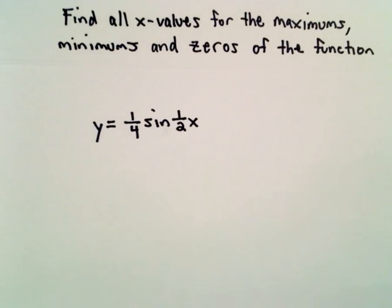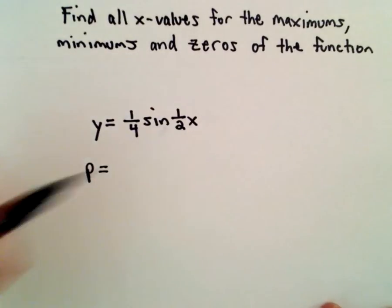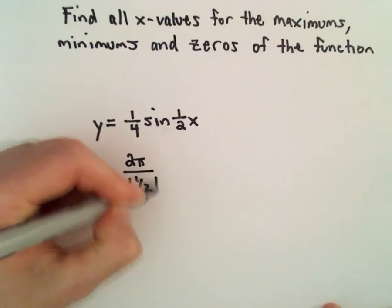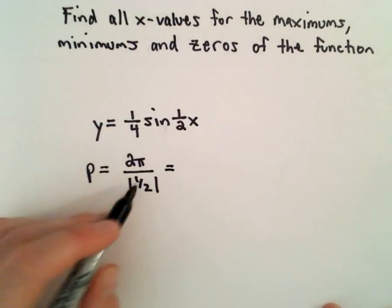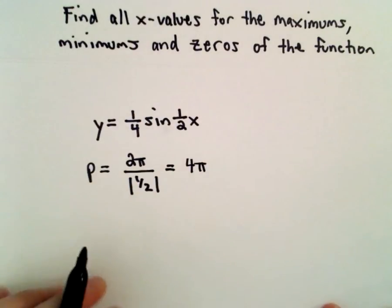Okay, so the first thing I'm going to do is think about the period of this function. So we'll have two pi divided by the absolute value of one-half. The absolute value of one-half is just one-half. So that's the same thing as two pi multiplied by two, which is four pi. So that's going to be the period.